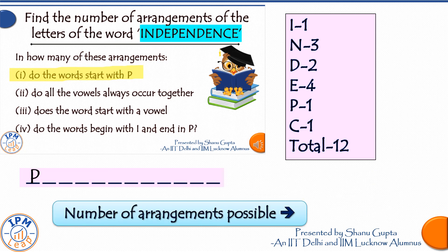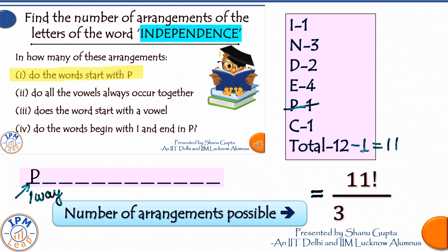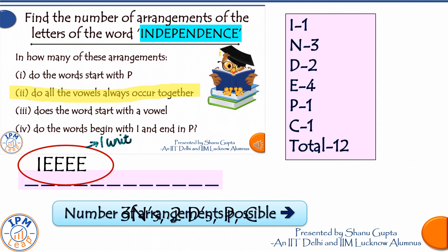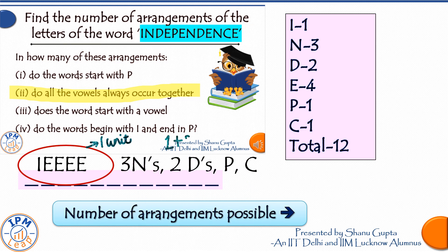In how many of these arrangements does the word start with P? We fix letter P in the first place, which can be done in only one way. The remaining 11 letters can be arranged in 11! / (3! × 2! × 4!) ways. In how many arrangements do all the vowels always occur together? We group all vowels into one unit. We now have 1 + 3 + 2 + 1 + 1 = 8 independent units, which can be arranged in 8! / (3! × 2!) ways — dividing by 3! for three N's and 2! for two D's.